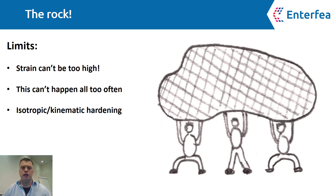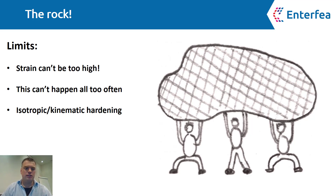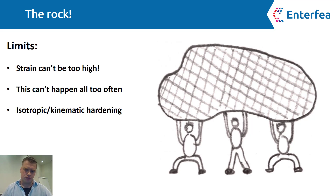Looking at this example, you can see several limits. First of all, strain cannot be too high — there is only so much you can squat until it's all done. Also, this can't happen all too often. If those guys will squat and stand up repeatedly, fatigue will kick in and this will be a very serious problem. There is also a mention of isotropic and kinematic hardening, which will change how those guys kneel and stand up in different load conditions.